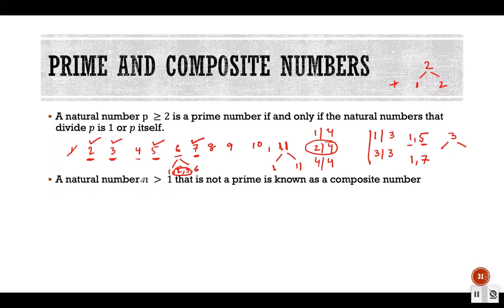A natural number n greater than 1 that is not a prime number is known as a composite number. The number 1 is considered neither prime nor composite. For all natural numbers greater than 1, a number is either prime or composite. Numbers greater than 1 which are not prime are known as composite.